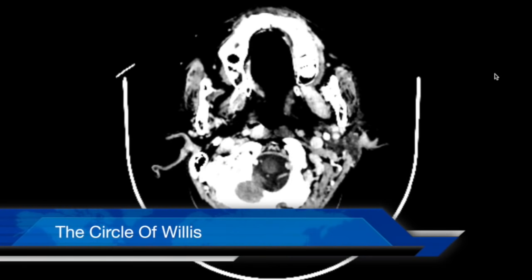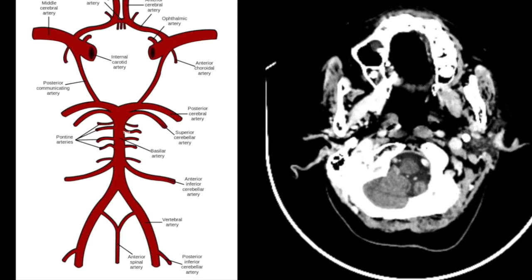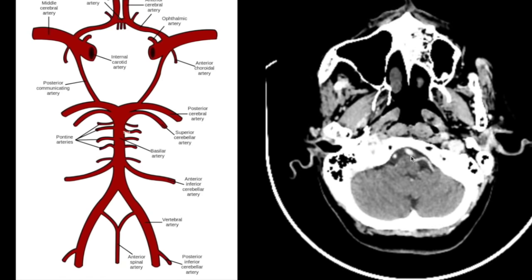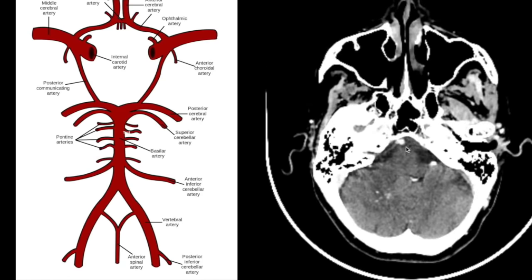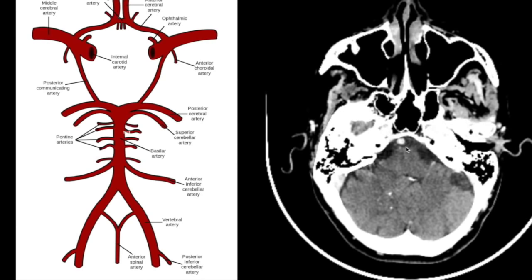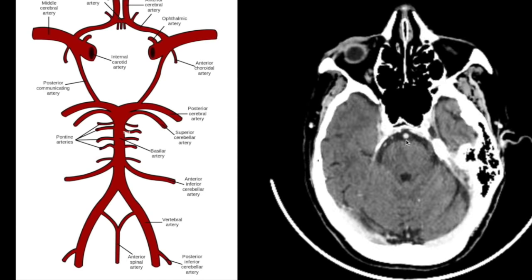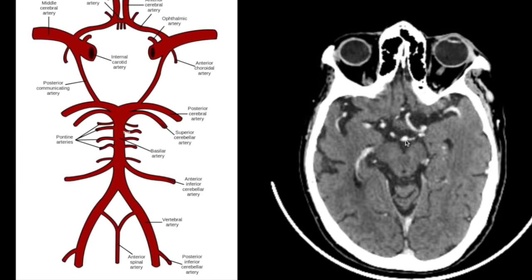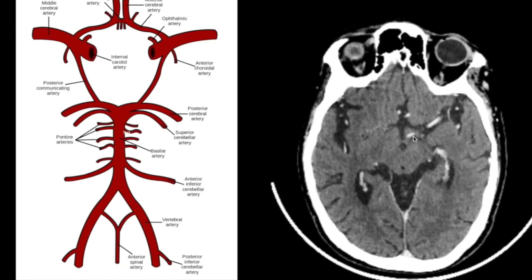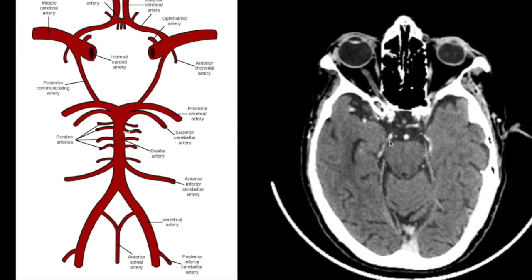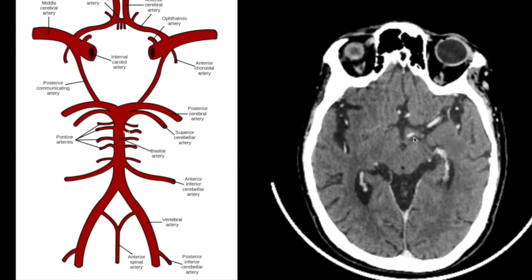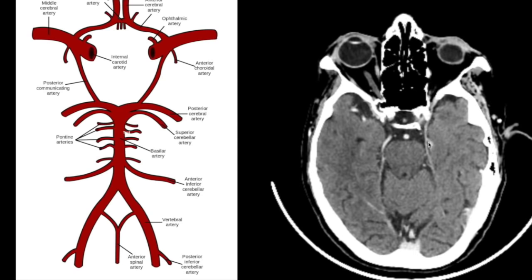Now the arterial anatomy — the circle of Willis. We are looking at a contrast-enhanced CT scan. We can see the right and left vertebral arteries, which join to form the basilar artery. There is often variation in vertebral artery size, and they may be ectatic in elderly or hypertensive patients. The basilar artery runs in the prepontine cistern in front of the pons, then splits into the right and left posterior cerebral arteries. These arteries curve around the perimesencephalic cisterns and run posteriorly, constituting the posterior circulation, which supplies most of the brainstem, cerebellum, part of the temporal lobe, and the posterior thalamus.